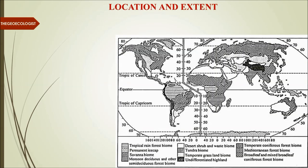When talking about biomes, location matters and the area of the earth it covers matters. As we learned earlier, a biome refers to a particular geographical area on the earth, and it has characteristics associated with its location and extent. That's why knowing the location and extent is a prerequisite for understanding human ecological adaptations there.